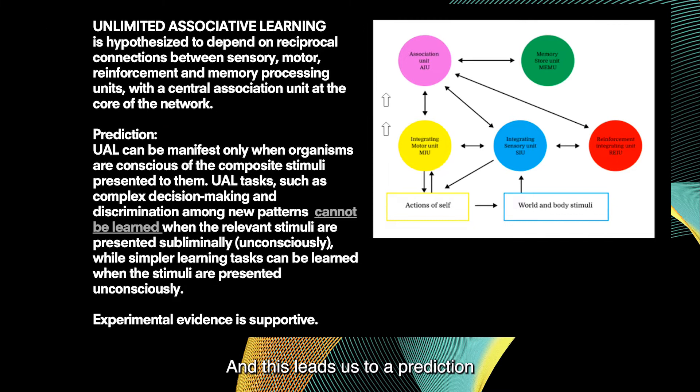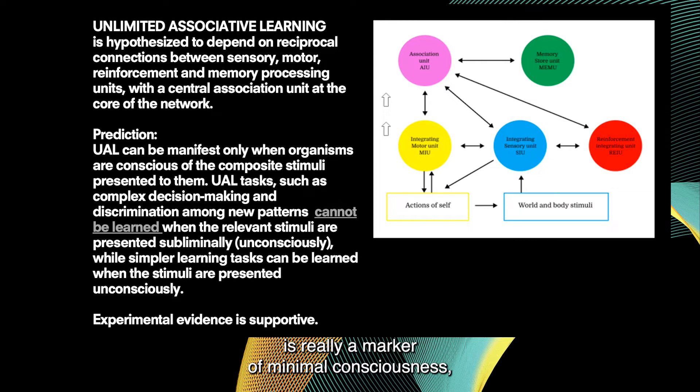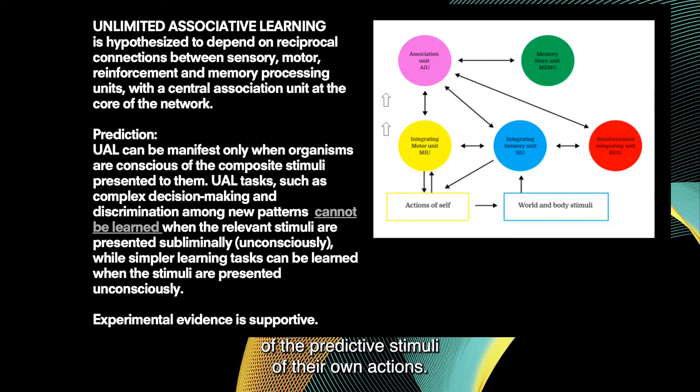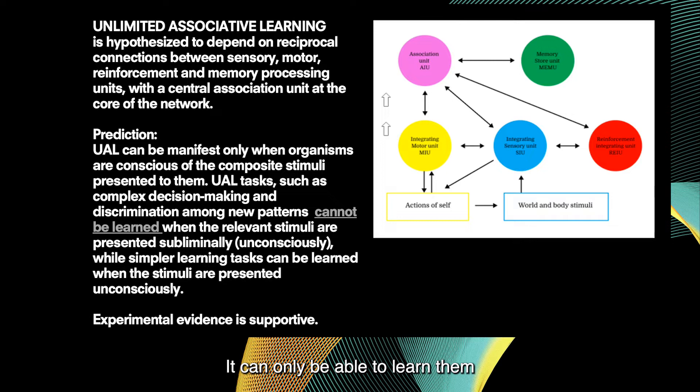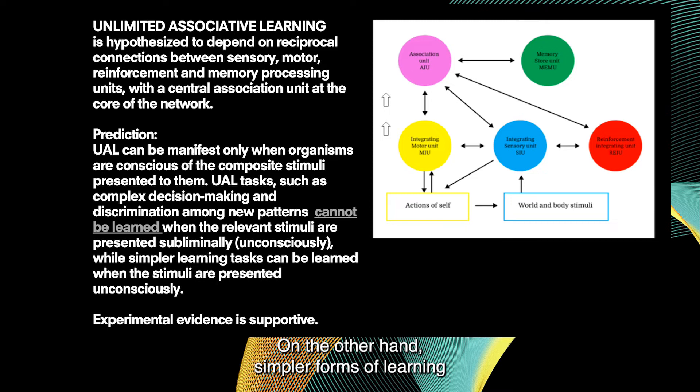This leads us to a prediction: if we're right and this kind of learning is really a marker of minimal consciousness, then this type of learning can be manifest only when animals are actually conscious of the predictive stimuli and of their own actions. If an animal is presented with stimuli subliminally, it will not be able to learn them — it can only learn them when it is conscious of them. On the other hand, simple forms of learning can be accomplished even when stimuli are presented subliminally. So far, at least in humans, these predictions have been borne out, and there are some experiments in monkeys that also support this.